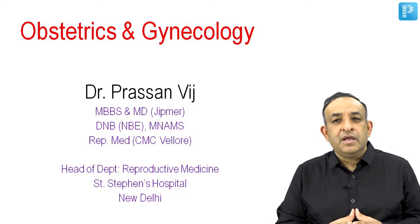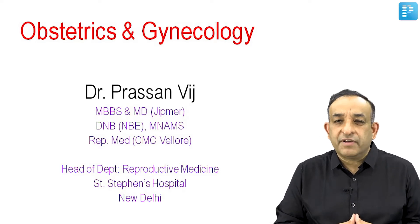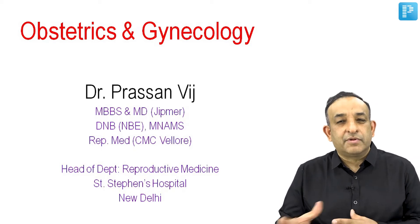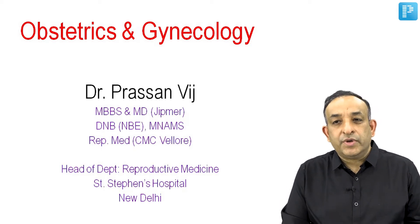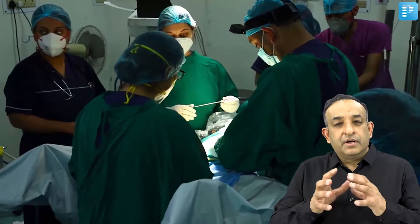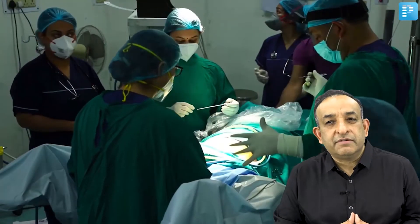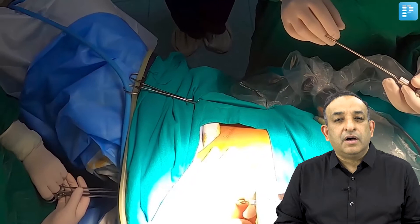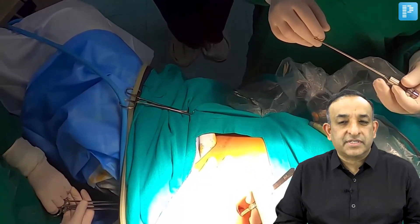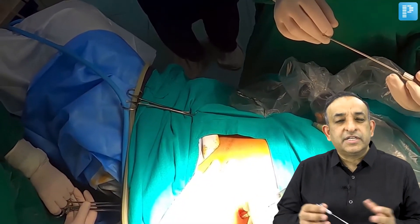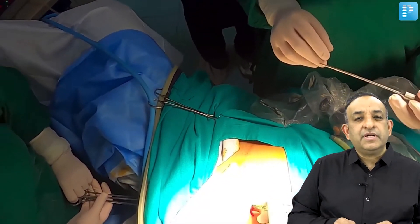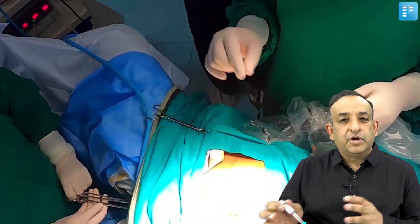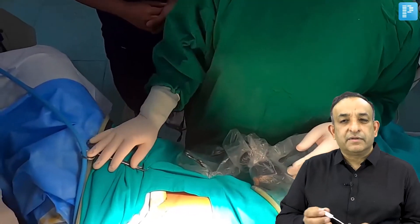I did this laparohysteroscopy along with my fellows of reproductive medicine and some postgraduates from the department of gynecology. When doing laparohysteroscopy, the first thing is to enter the abdomen and make a pneumoperitoneum by putting in carbon dioxide to distend the abdomen. Entry into the abdomen is done by the Veress needle.